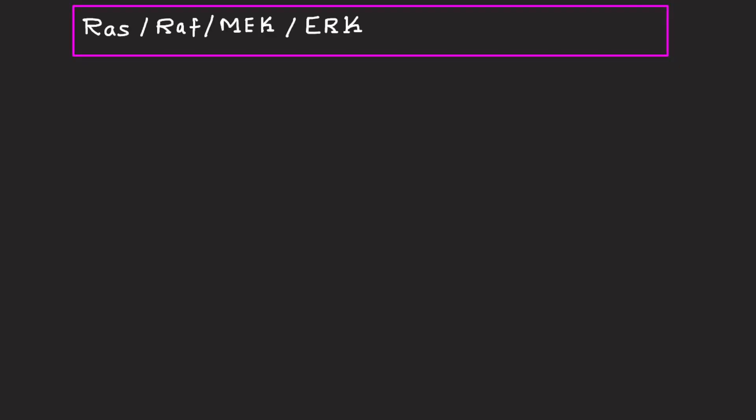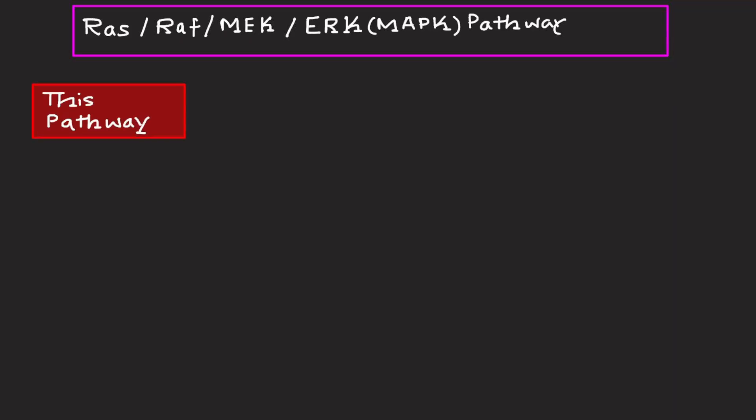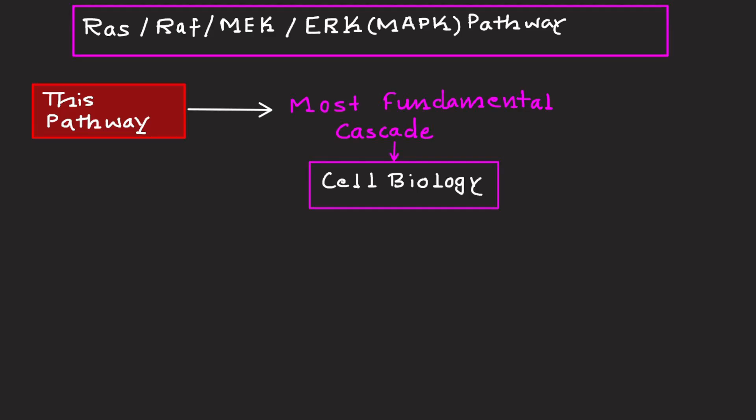In this video we will be understanding the RAS-RAF-MEK-ERK pathway. Let's start with the introduction to the MAP kinase pathway. The RAS-RAF-MEK-ERK signaling pathway — this is the full name, in short it is also known as the MAP kinase pathway — is one of the most fundamental cascades in cellular biology.